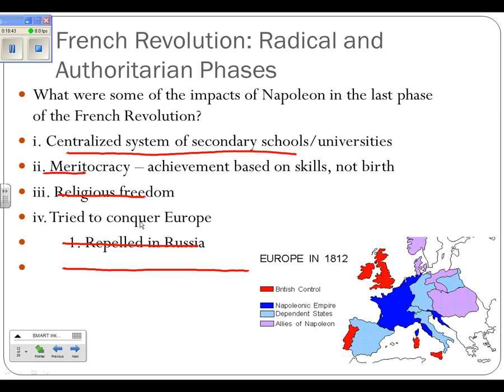Then Napoleon tried to conquer Europe. He will be very successful, covering most of Europe. But he gets stopped in Russia. He'll think he can make it to Moscow before winter sets in, and he actually gets close. But Russia harasses him and drops back, harasses and drops back. He gets stuck in mud, stuck in the early winter. He makes it to Moscow, but the people of Moscow burn the city and any food in it, making sure there's nothing for him to eat. He has to return to France with his army.